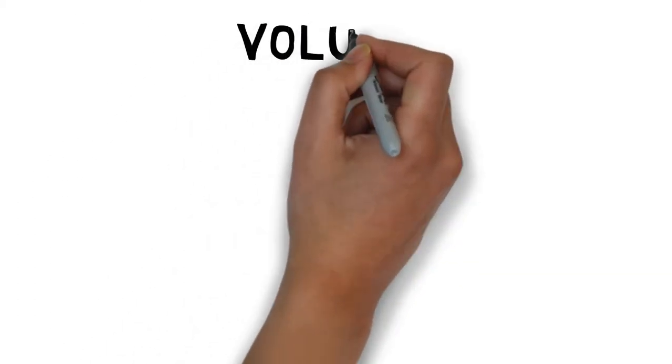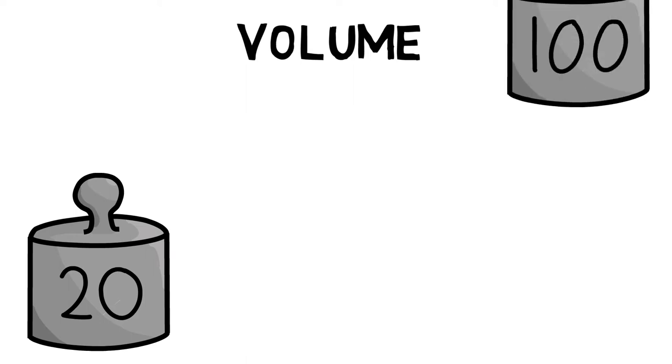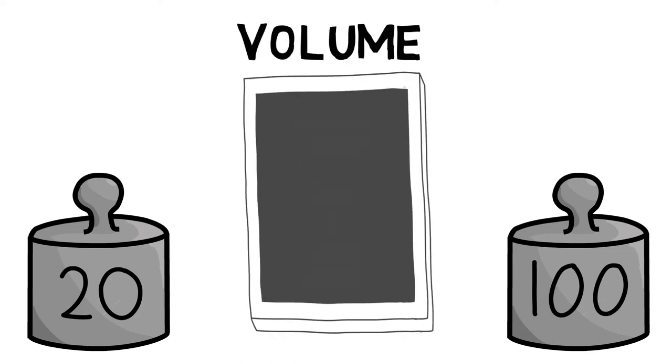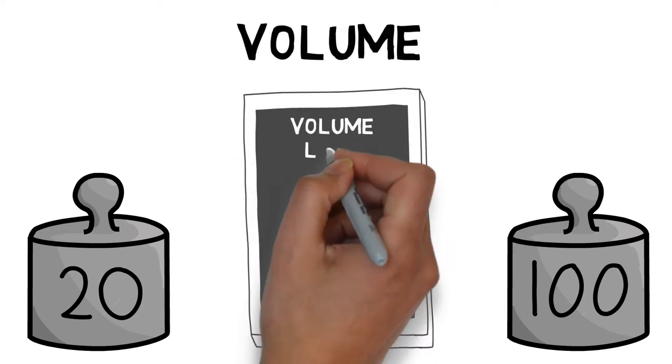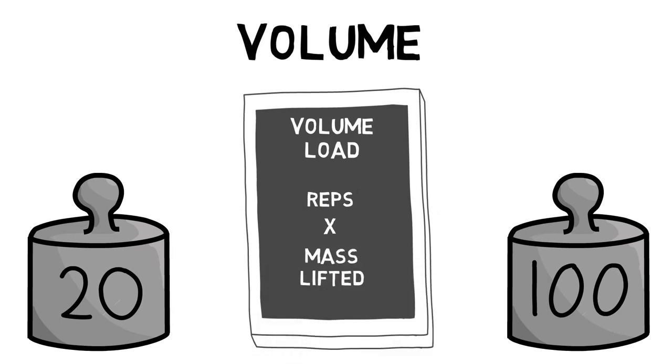There are a number of variables that can be manipulated through training to maximize performance and adaptations. Volume is an estimate of how much total work is accomplished and an estimate of total energy expended. Volume load, which is reps times mass lifted, is the best practical estimate of work accomplished during a workout.